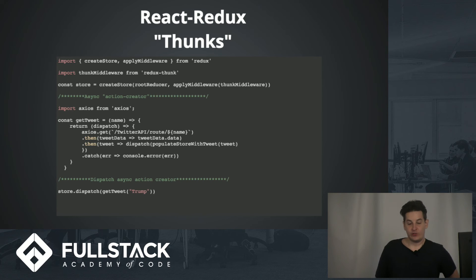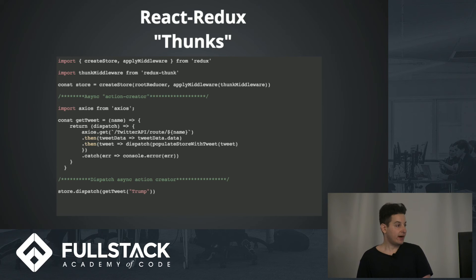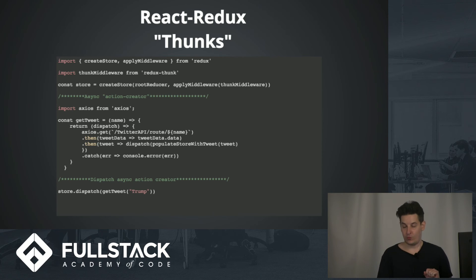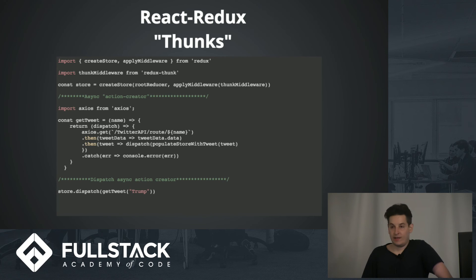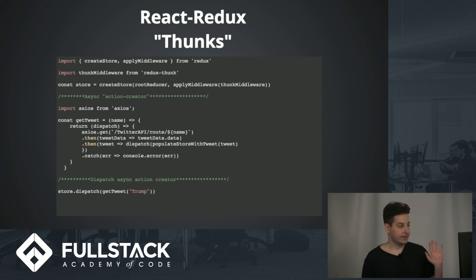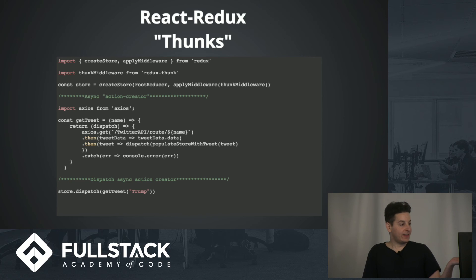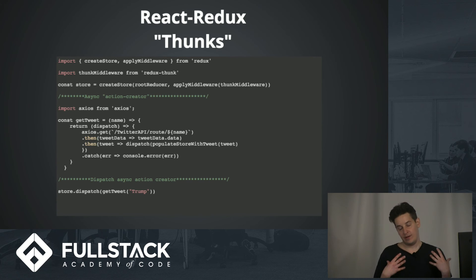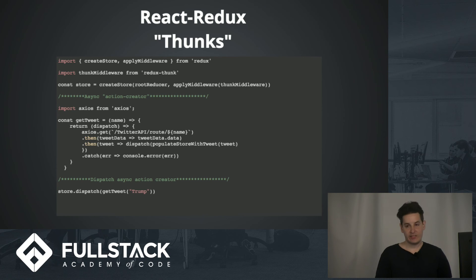Now I'll introduce a tool you might be interested in trying out — a piece of middleware called Redux Observable. What we're currently using is something called a thunk in React Redux when dealing with asynchronous operations. A thunk is basically a function that wraps an expression in order to delay its evaluation. It's like an action creator that returns a function; the middleware recognizes it as a function, sends the API request, and when it's done, it's done.